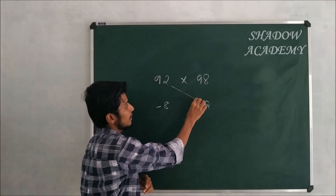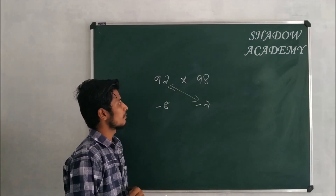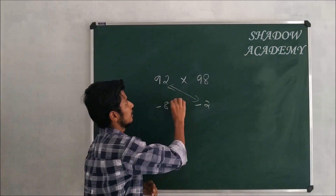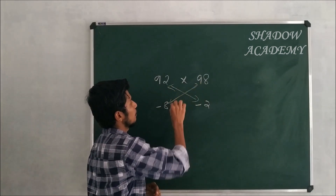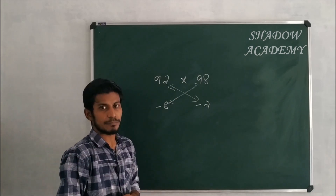So first: 92 minus 100 gives us minus 2. Then, 98 minus 100 gives us minus 8.